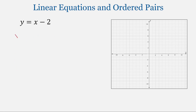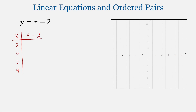I'm going to make a table to find ordered pairs of this linear equation. We're going to have different values for x — I'm going to use negative 2, 0, 2, and 4. But you can pick any numbers you want. Then I will evaluate this equation at those values by plugging those values of x into the equation, which will give us the value for y.